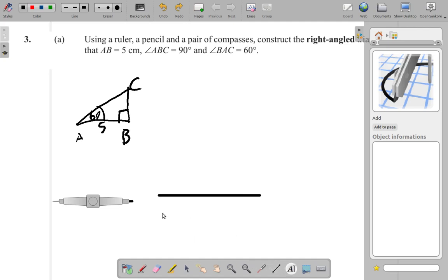Let me put A here. A is right here. And B is here. So AB is 5 cm.